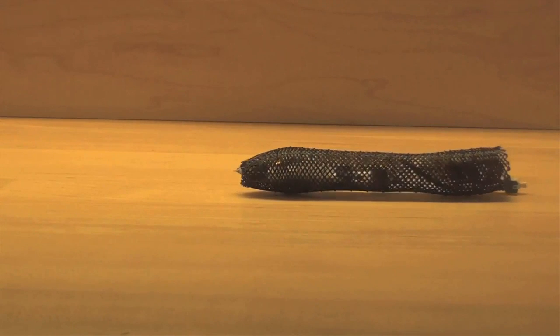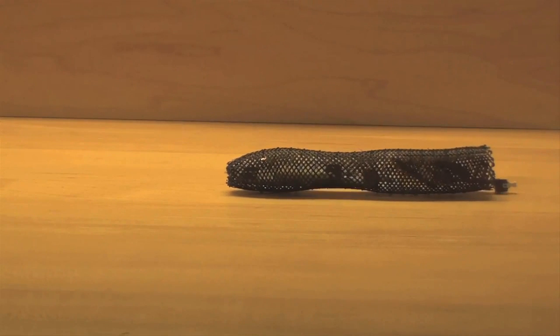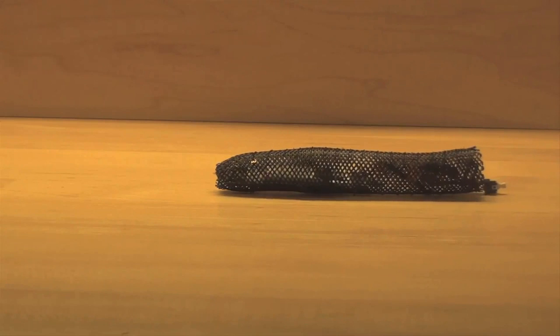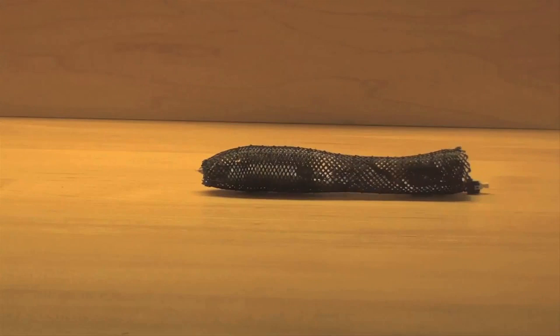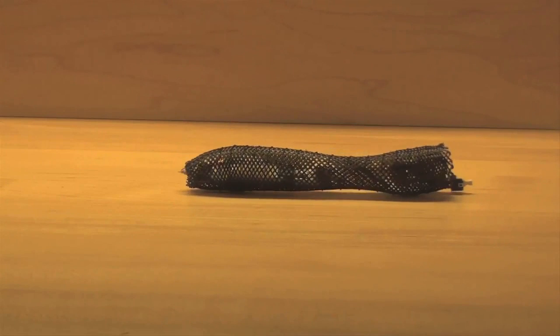Researchers at MIT, Harvard University, and Seoul National University have engineered a soft, autonomous robot that can crawl across surfaces by squeezing segments of its body like an earthworm.